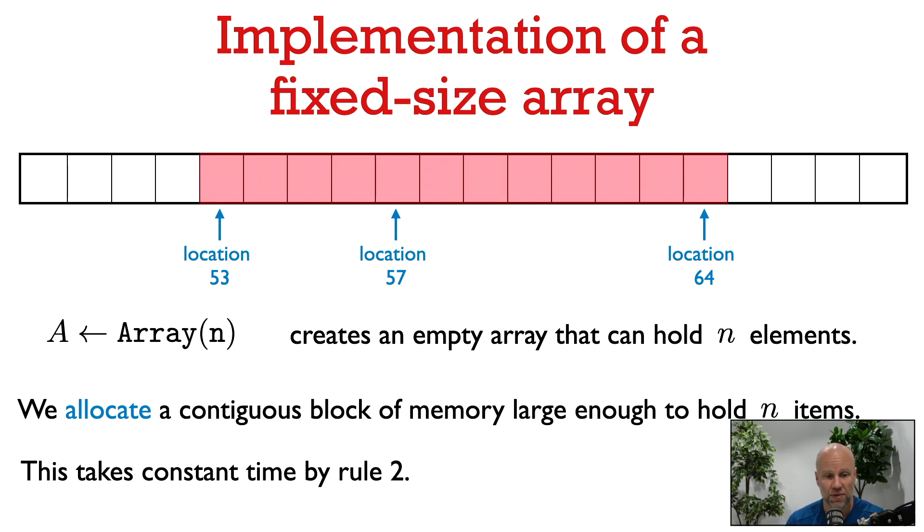So to implement the creation of an empty array that can hold n items, what we do is allocate a contiguous block of n words. So in the example here, we are allocating 12 words from location 53 to 64. So by our second rule, this allocation takes constant time. It's important to note that we're not writing anything to these 12 words. All we're doing at this point is just reserving these 12 words, saying, hey, I want to use these 12 words so no other process uses them.